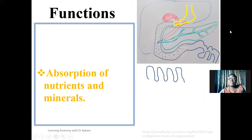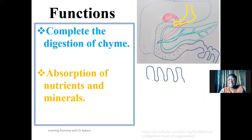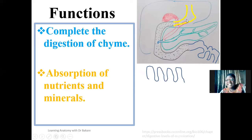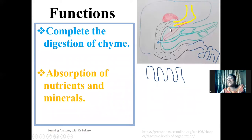The small intestine is a region of the GI tract that helps to complete the digestion of chyme. Chyme is partially digested food coming from the stomach. Food particles that are partially digested are directed to the small intestine, first into the duodenum, before going further to the other regions. Complete digestion occurs through the release of bile from the gallbladder and secretions from the pancreas.